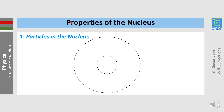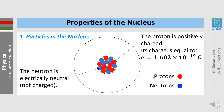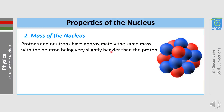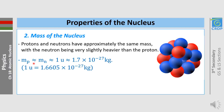Let's move to the properties of the nucleus, starting with the particles in the nucleus. The nucleus contains protons and neutrons. The proton is positively charged, and its charge is equal to 1.602 × 10⁻¹⁹ coulombs, while neutrons are electrically neutral. Protons and neutrons have approximately the same mass, with the neutron being very slightly heavier than the proton, approximately equal to 1 atomic mass unit U, which is approximately 1.7 × 10⁻²⁷ kg.